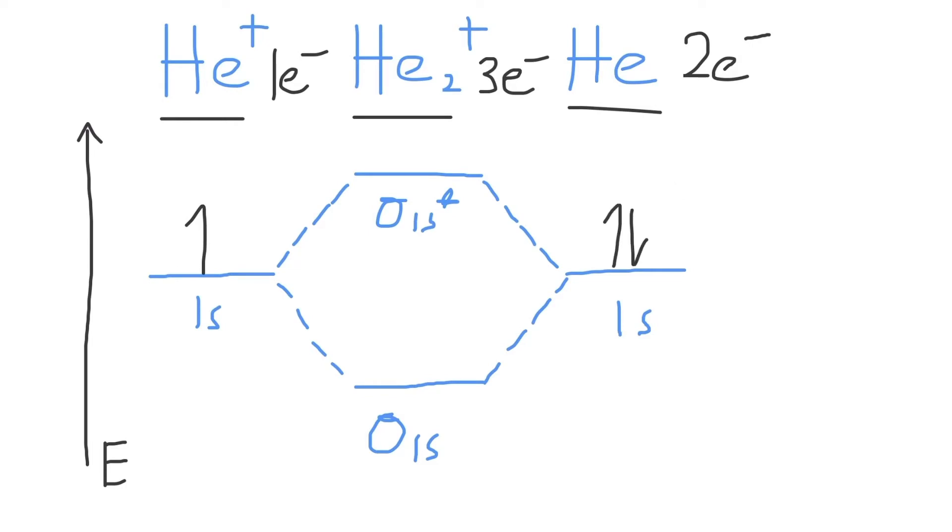Then, we need to fill these three valence electrons present in our atomic orbitals into our molecular orbitals. So we'll start with the lowest energy, and two electrons will fill up the σ1s bonding molecular orbital. And then, the last electron will rise to the higher energy, antibonding, σ1s star molecular orbital.